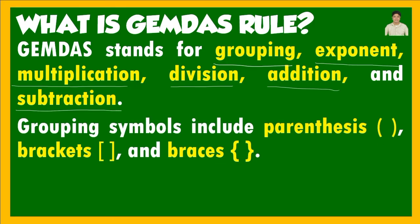The grouping symbols include parentheses — that is what parentheses look like — then brackets, and then braces, which we call curly brackets. Those are our grouping symbols. The exponent is the number written above our base.